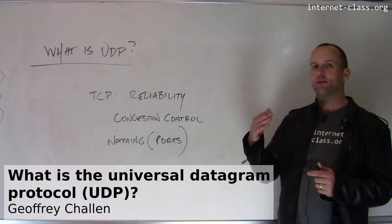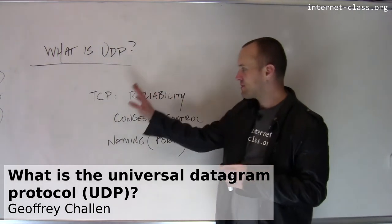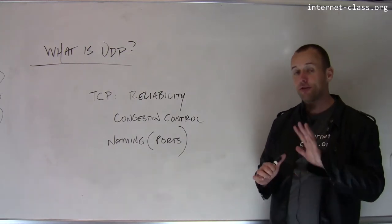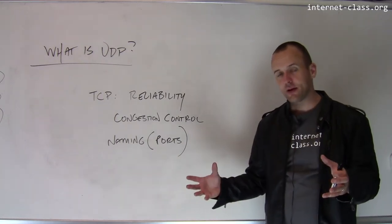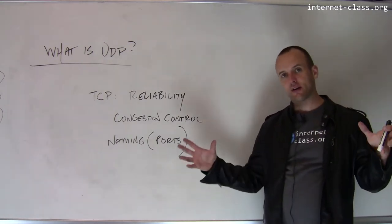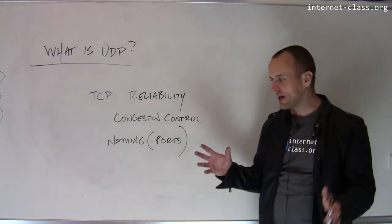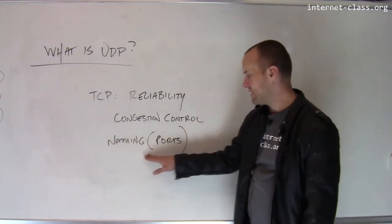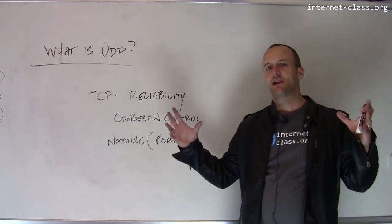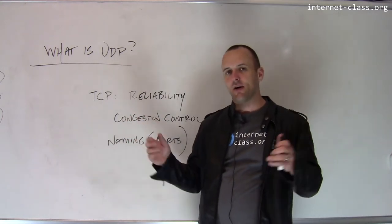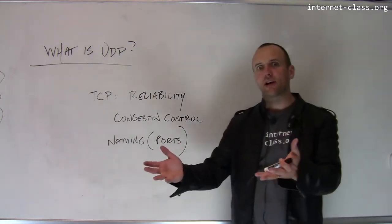TCP builds reliable connections on top of the IP layer and introduces a couple of new features useful for many connections on the internet. Those include reliability, congestion control, the ability for multiple clients to share the network effectively and establish a sustainable speed. It also introduces naming through port numbers, which identify both ends of each TCP connection, allow different services to run on the same machine, and allow the same client to make multiple connections to the same server.